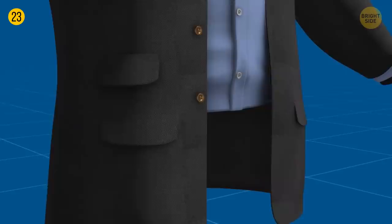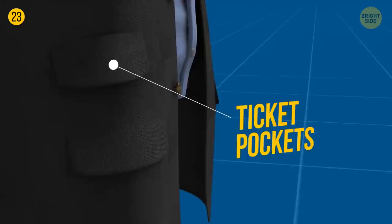A dinner jacket has small pockets above regular ones. They're called ticket pockets and gentlemen wearing such jackets can quickly pull the tickets before getting on a train.